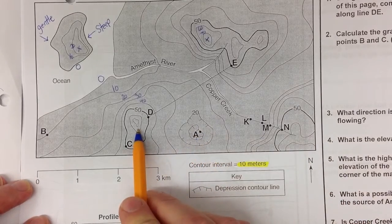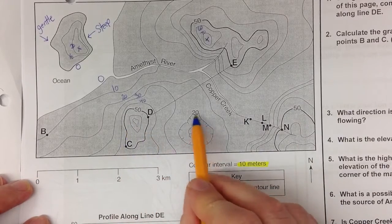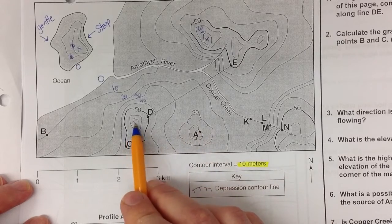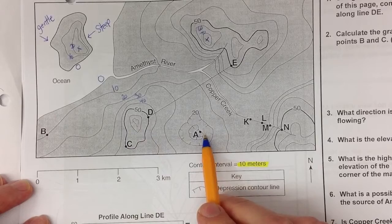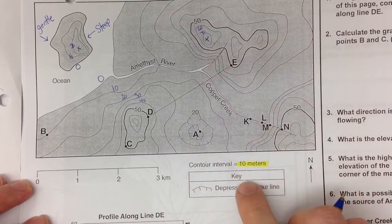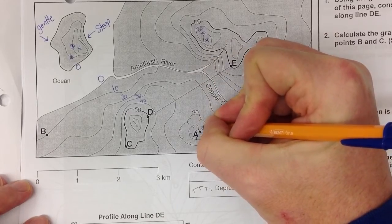You'll notice that the hill just to the west of the depression, there are no hatcher lines, but this feature does. That's how we know the hill, you're going up in elevation with the depression going down in elevation. So again, knowing that we're changing by 10 meters, this point A would be 10 meters.